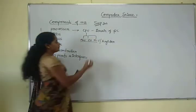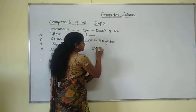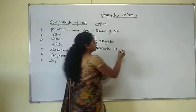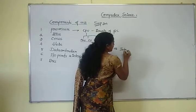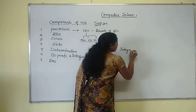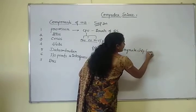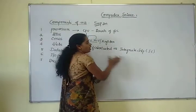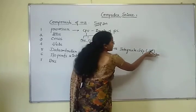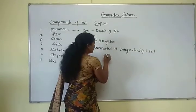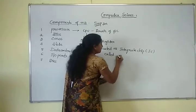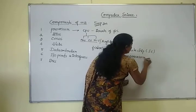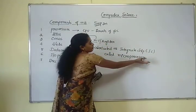This CPU is fabricated as a single chip. That single chip is called an IC chip. IC stands for integrated chip. This integrated chip is called a microprocessor.